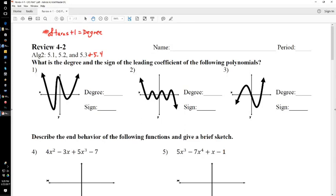Okay, so if you have 3 turns, the degree is 4. It can be higher, but that's the smallest the degree can be. So in this case, number 1, you have 1, 2, 3 turns, so your degree is 4.